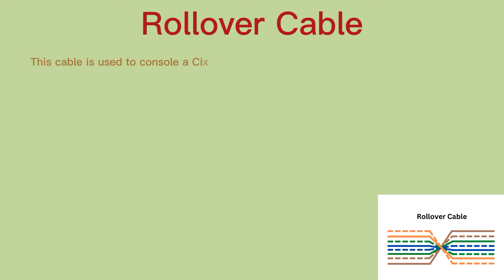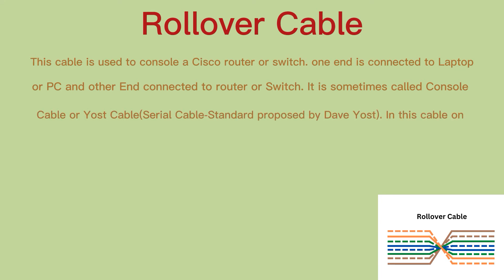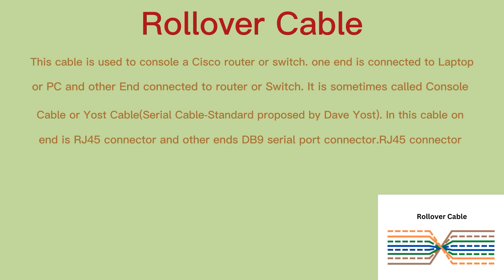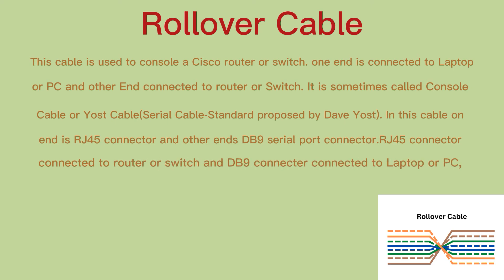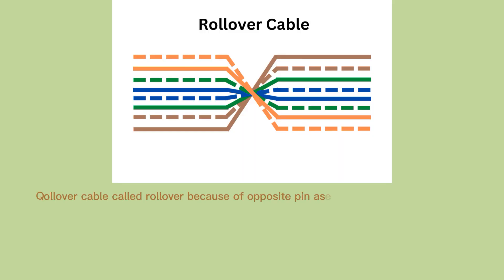Rollover cable. This cable is used to connect to a Cisco router or switch console port. One end is connected to a laptop or PC and the other end is connected to the router or switch. It is sometimes called a console cable or Yost cable — a serial cable standard proposed by Dave Yost. In this cable, one end has an RJ45 connector and the other end has a DB9 serial port connector. Nowadays, USB to serial port adapters or USB-type console cables are available in the market. The cable is called a rollover cable because of opposite pin assignments on each end.